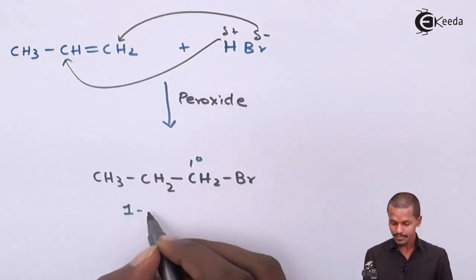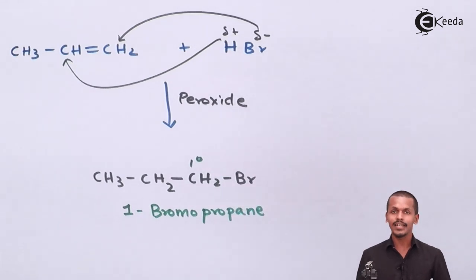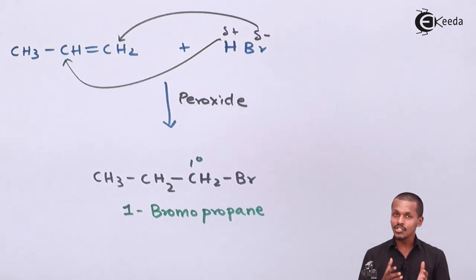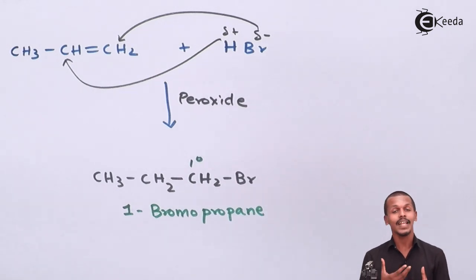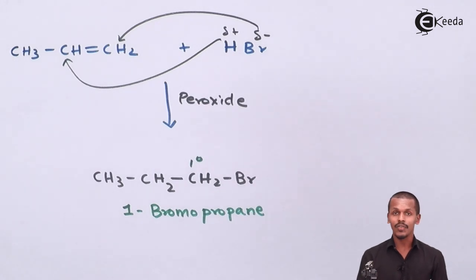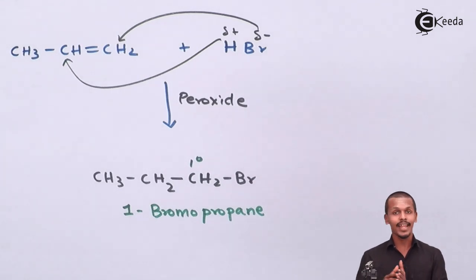To understand why Markovnikov's rule gives a secondary alkyl halide and anti-Markovnikov's rule gives a primary alkyl halide, we need to look at two different mechanisms: electrophilic addition (for Markovnikov's rule) and free radical mechanism (for anti-Markovnikov's rule).